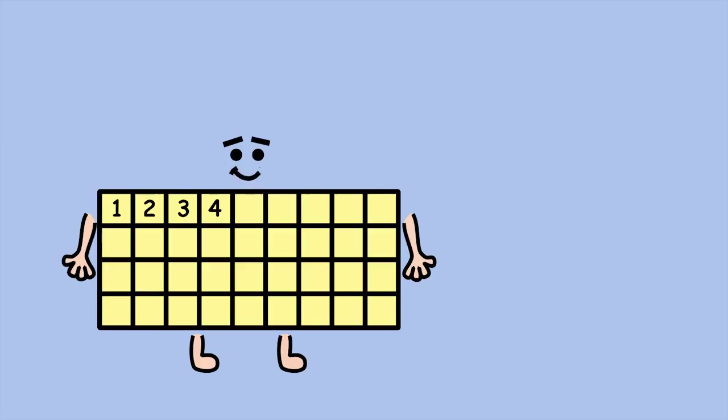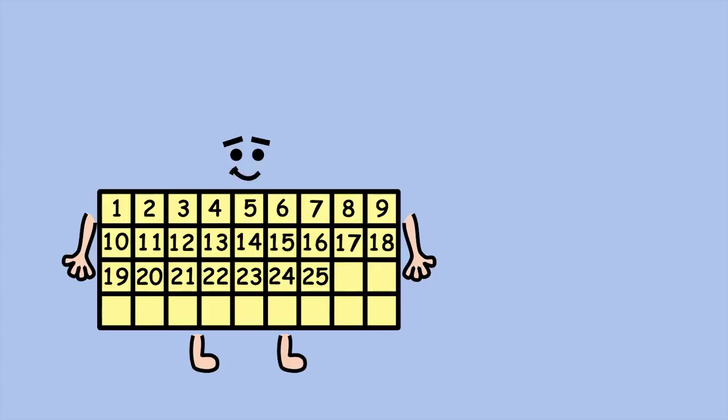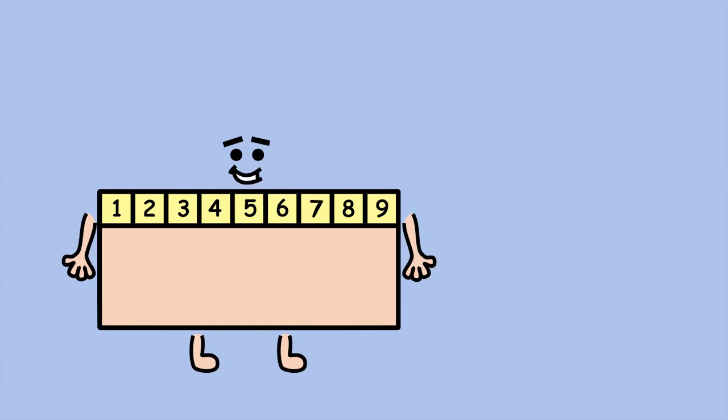1, 2, 3, 4, 5, 6, 7, 8, 9, 10... [continues counting each square] ...34, 35, 36. But there's a quicker way than counting the squares one by one. Each row has nine squares.